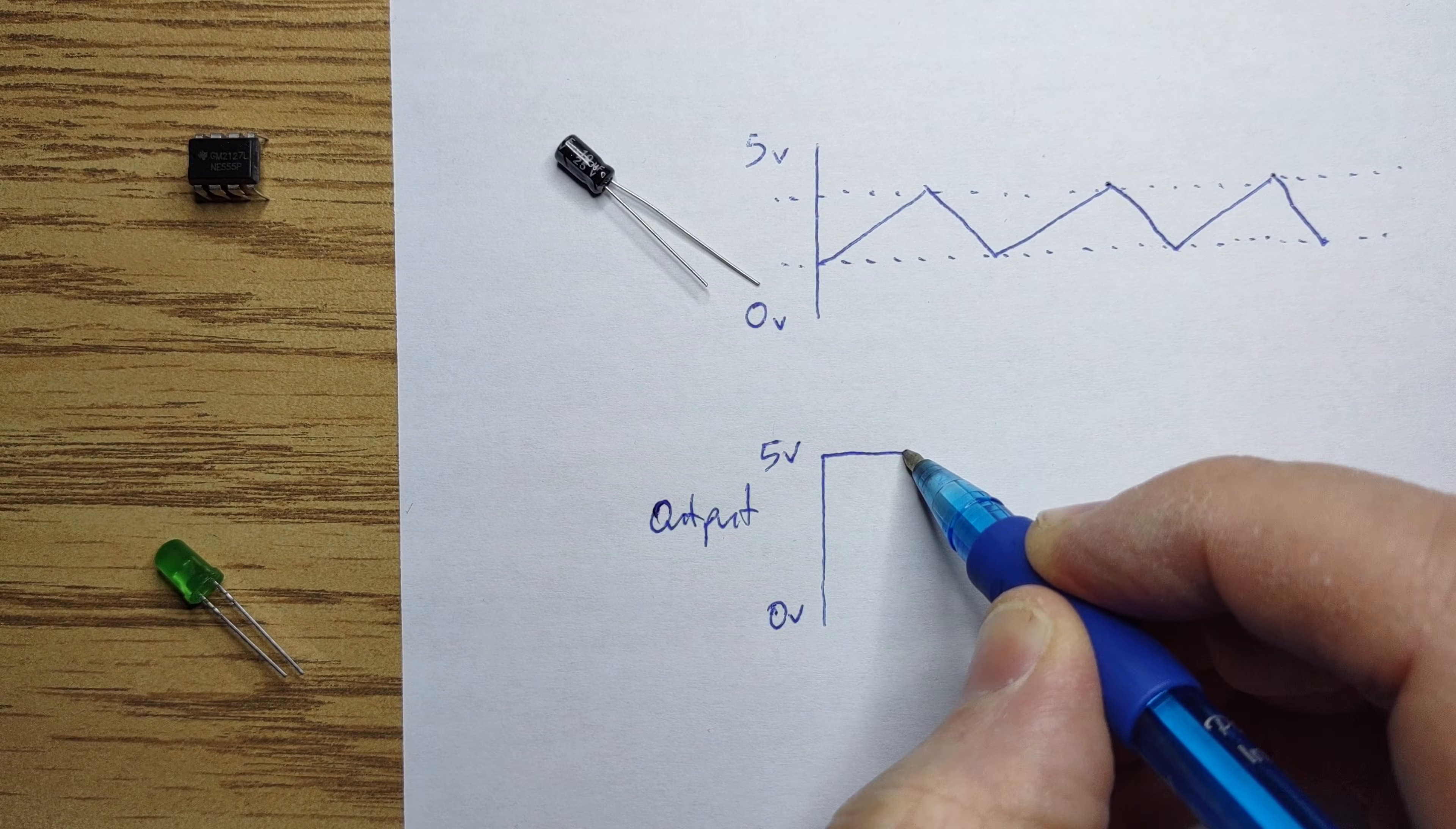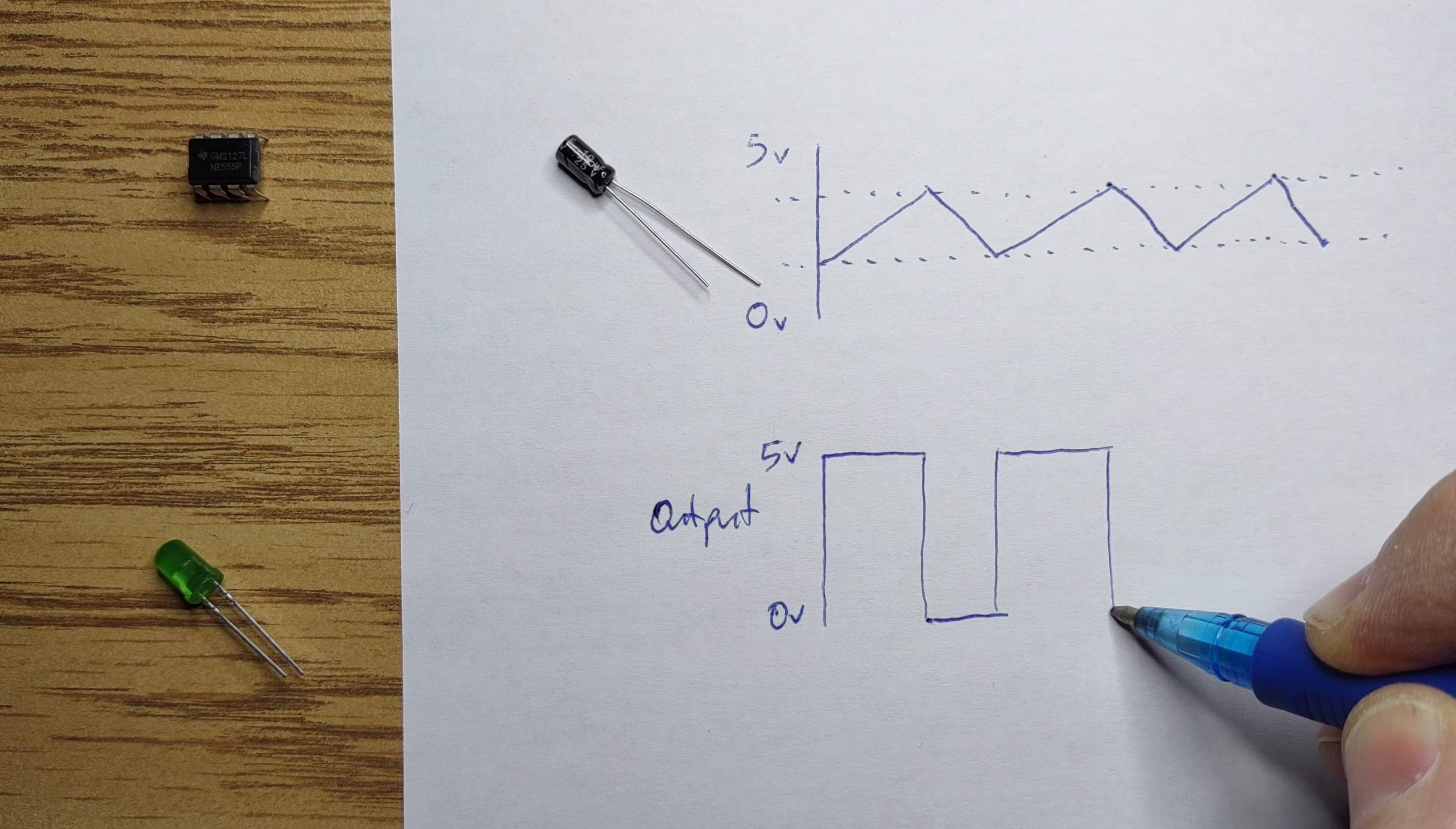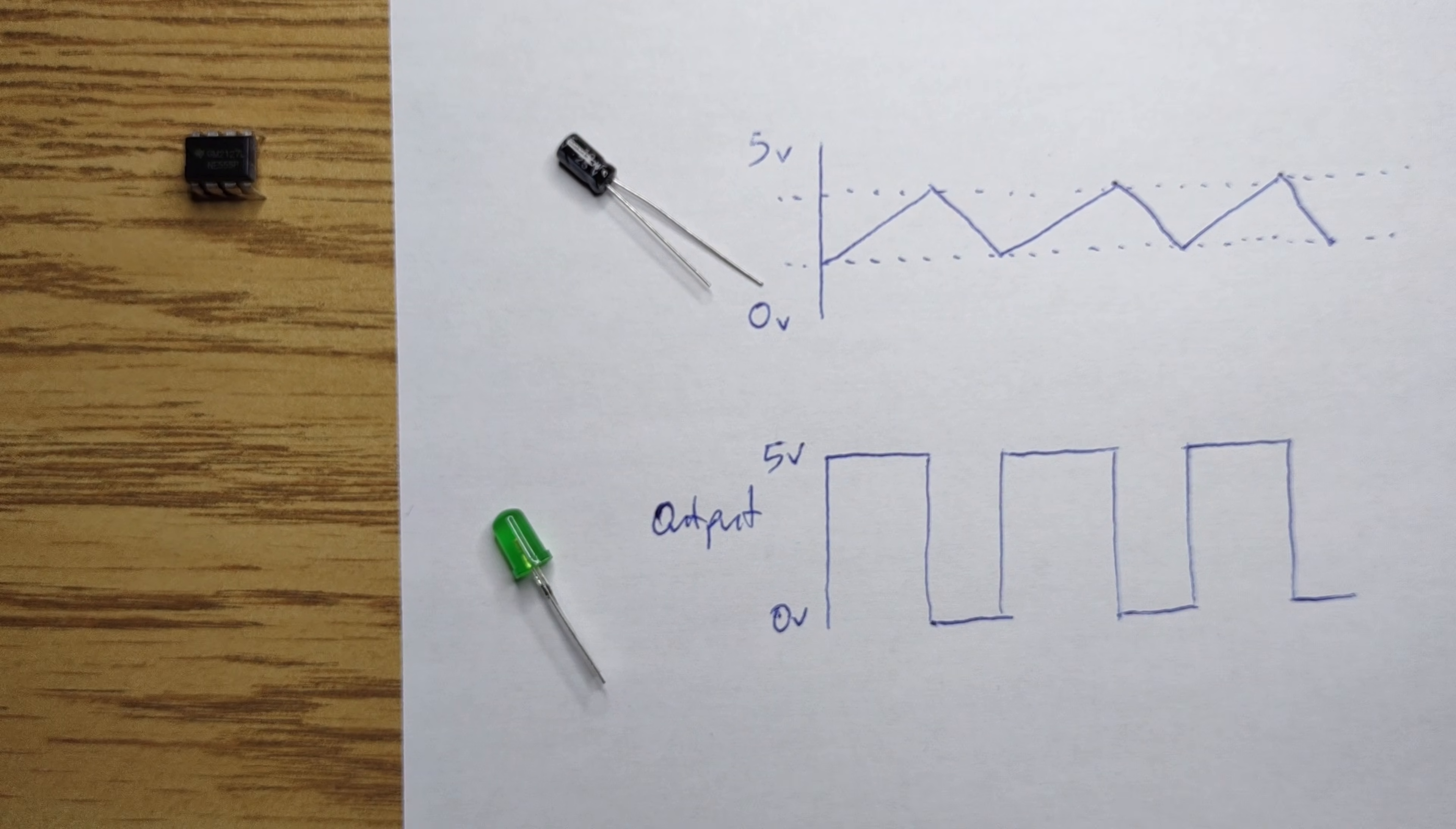At the same time, the output pin will give us the state of the flip-flop. While charging, the output is high, and while discharging, the output is low. We'll connect an LED to the output, and we should see it blinking on and off.